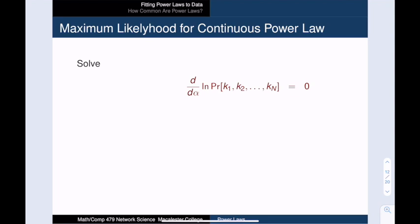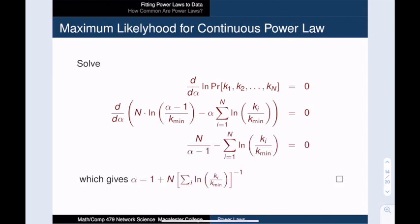So how do I find the maximum value? Well, by taking the derivative and setting it equal to zero. And when I differentiate with respect to alpha, we get this expression. Rearranging gives the maximum likelihood estimator formula that we are looking for. So this formula really does find the best fitting power law exponent.